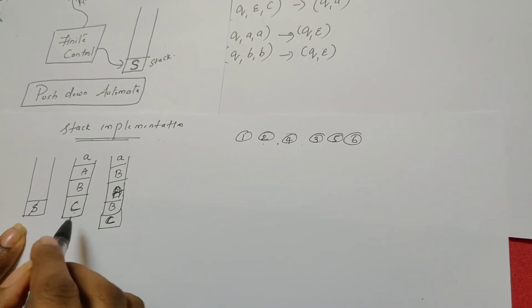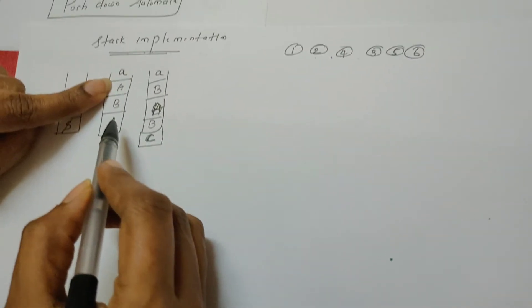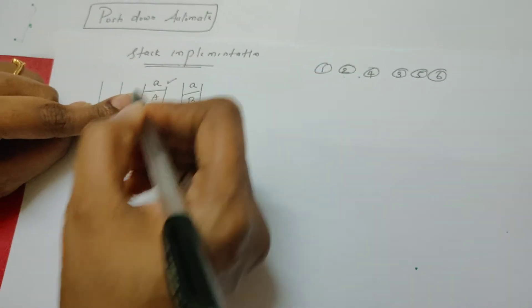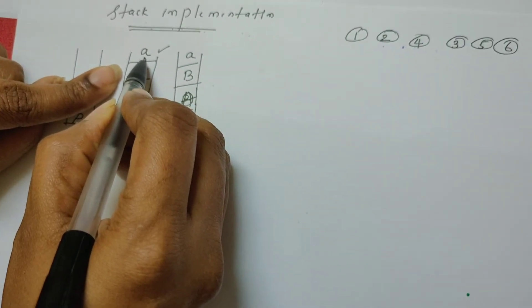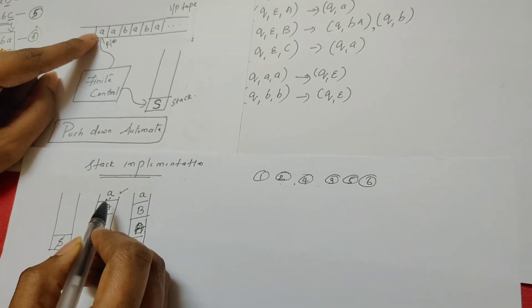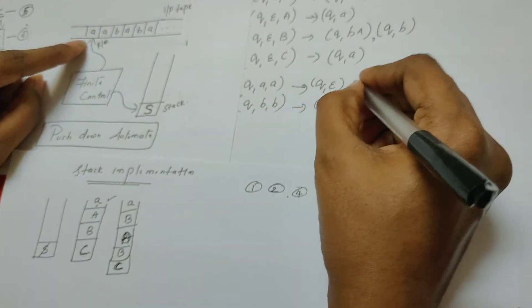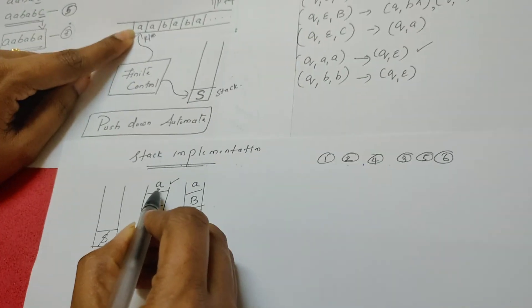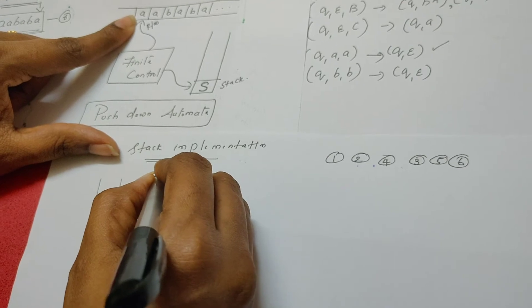S is replaced by A, A, B, C — but you push C first, followed by B, followed by A, followed by terminal a. Now the top of the stack is a terminal symbol. Whenever there is a terminal at the top of the stack, the read-write head checks the input tape — it is also terminal a, the same symbol. So we execute the pop rule: since input symbol and top of stack both are a, we pop the top of the stack.